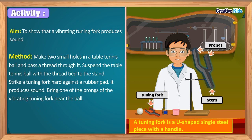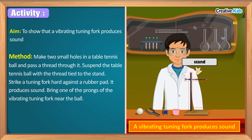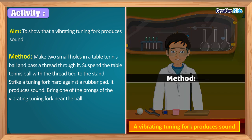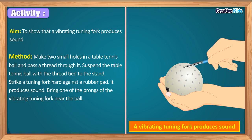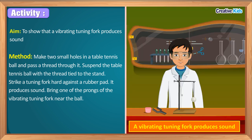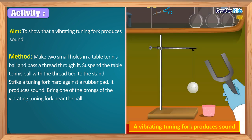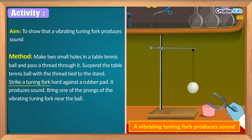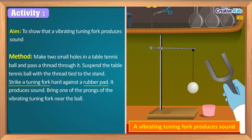Apart from the tuning fork, we need a tennis ball, an iron stand, a rubber pad, and a piece of thread. First, make two small holes in a table tennis ball and pass a thread through it. Suspend the table tennis ball with the thread tied to the stand. Then take the tuning fork and strike it hard against the rubber pad.